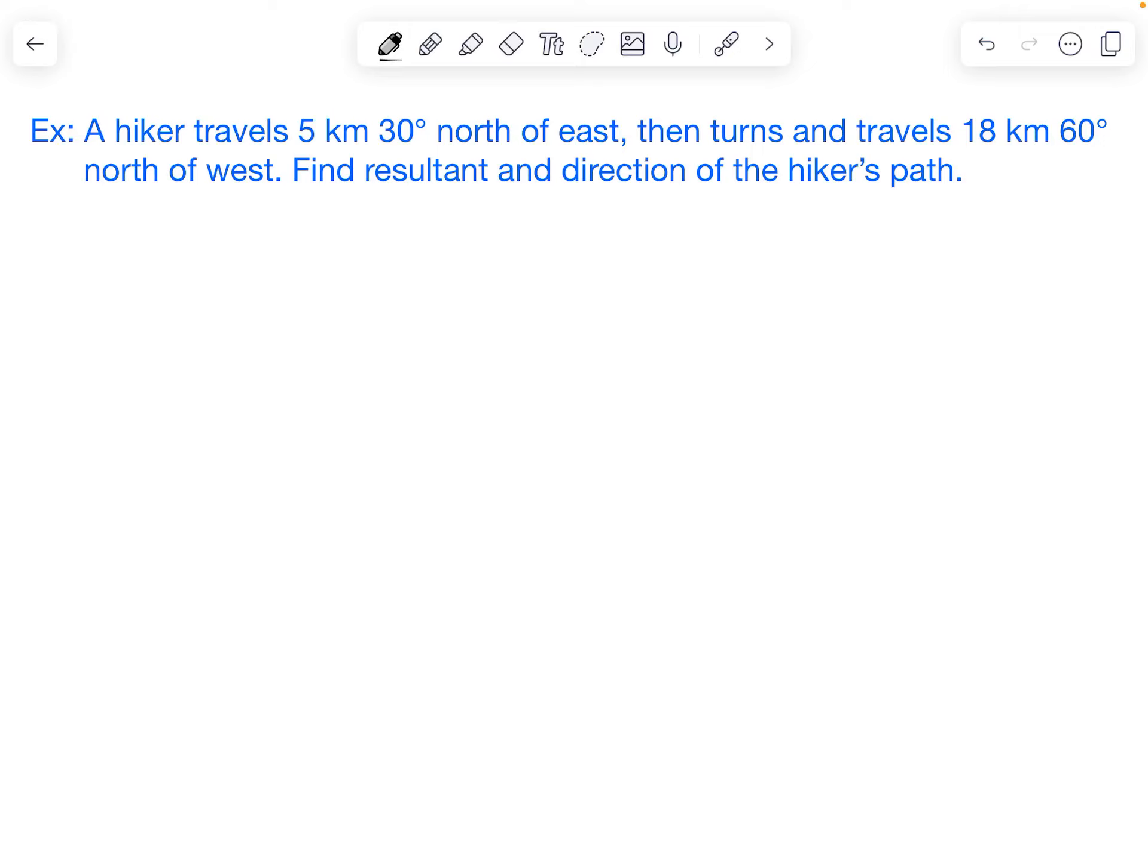Here's our example. A hiker travels 5 kilometers 30 degrees north of east, then turns and travels 18 kilometers 60 degrees north of west. Find the resultant and direction of the hiker's path.